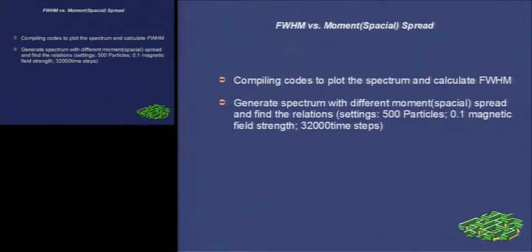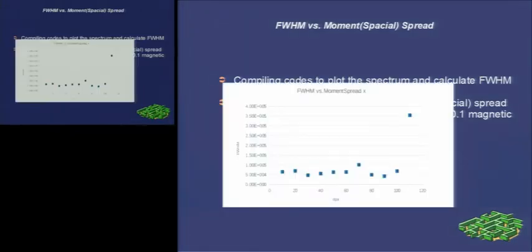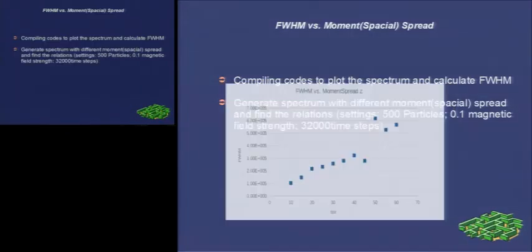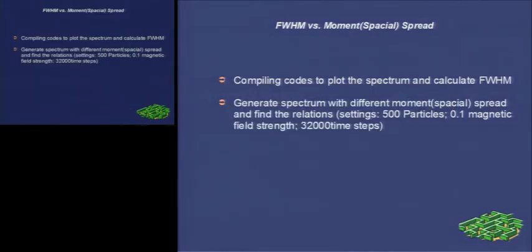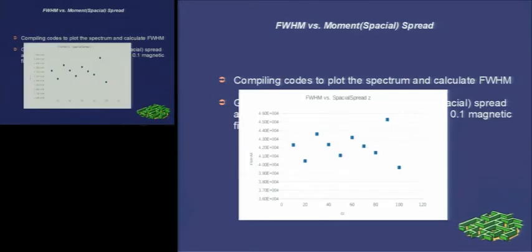Then, by combining all results, we can see some relation. The FWHM almost keeps steady with momentum spreading in X while increasing in Z direction. As for the spatial spread in Z, it is almost steady with a maximum 5% fluctuation around a constant.